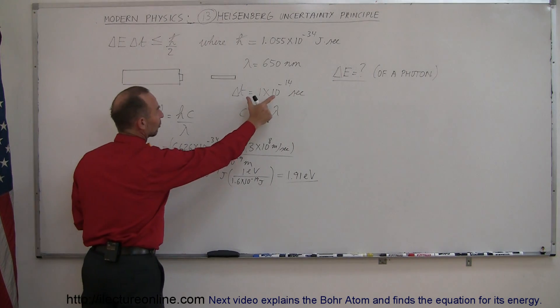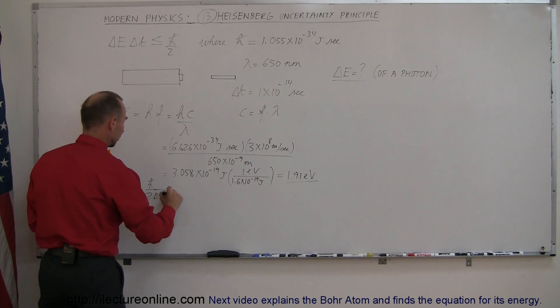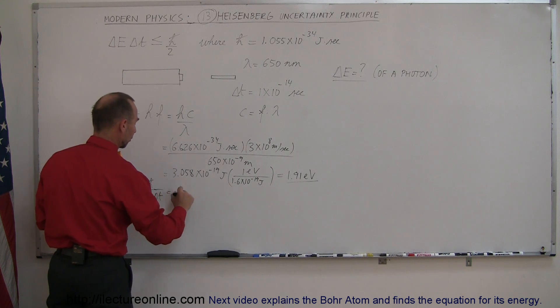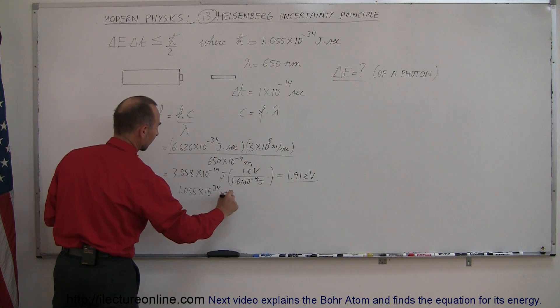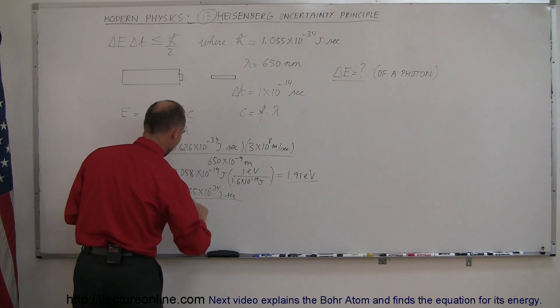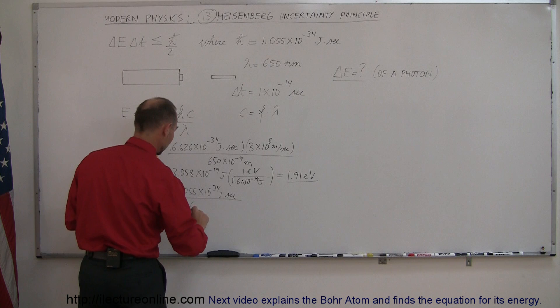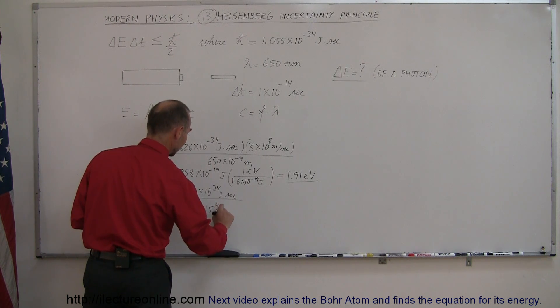So the uncertainty in time is the length of that pulse. This would be equal to ℏ, which is 1.055×10⁻³⁴ joule-seconds, divided by two times the uncertainty in the time, which is 1×10⁻¹⁴ seconds.